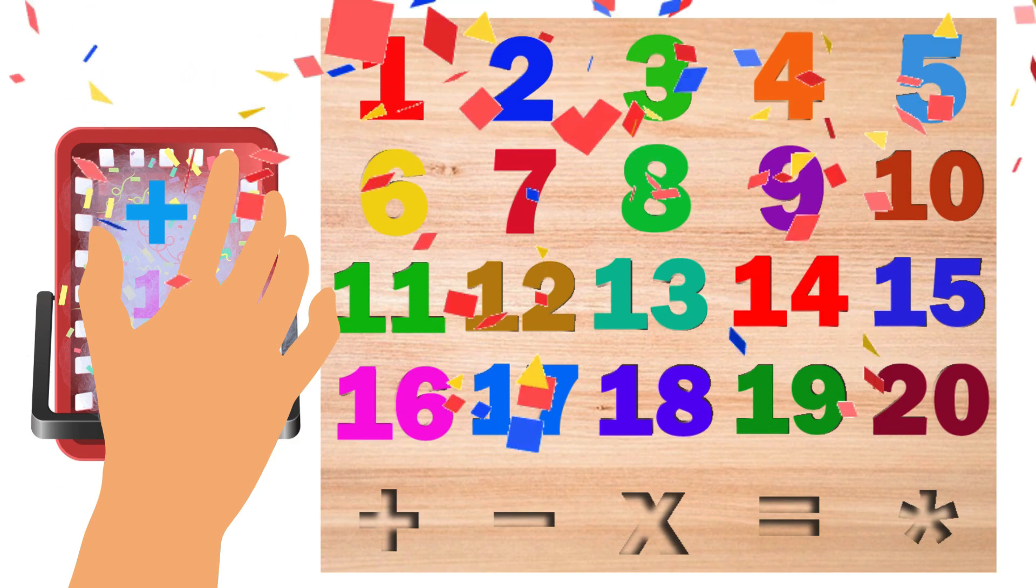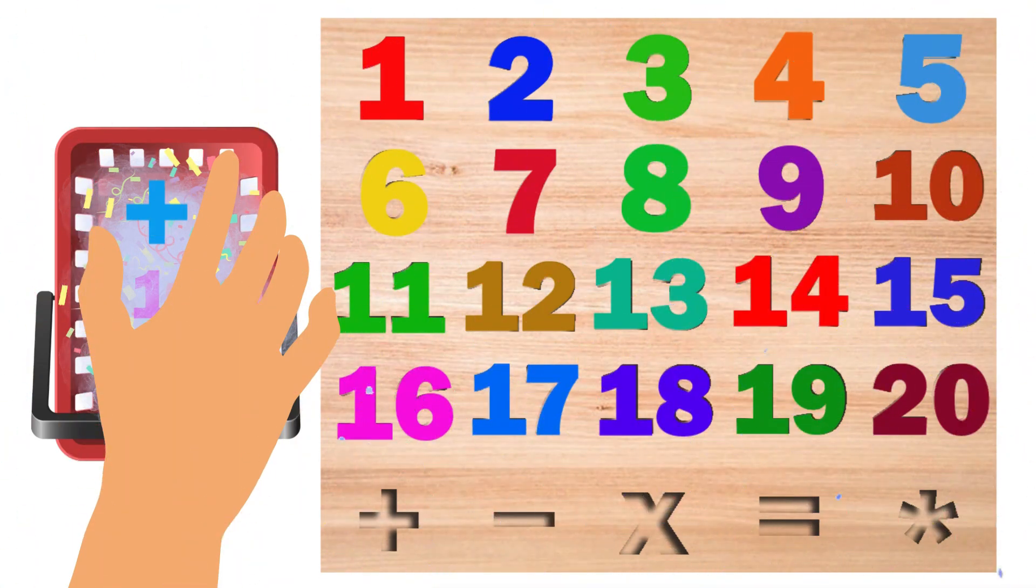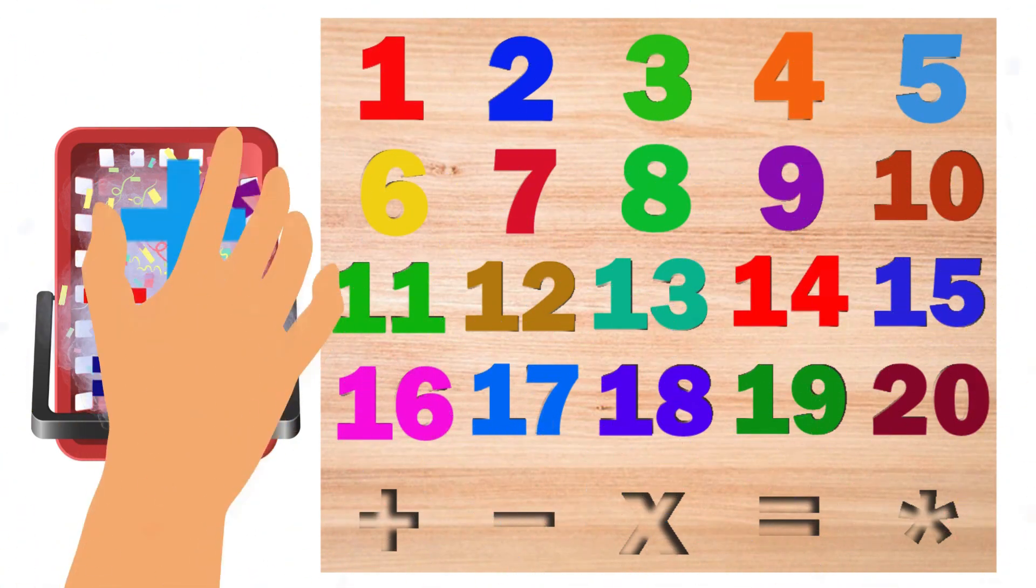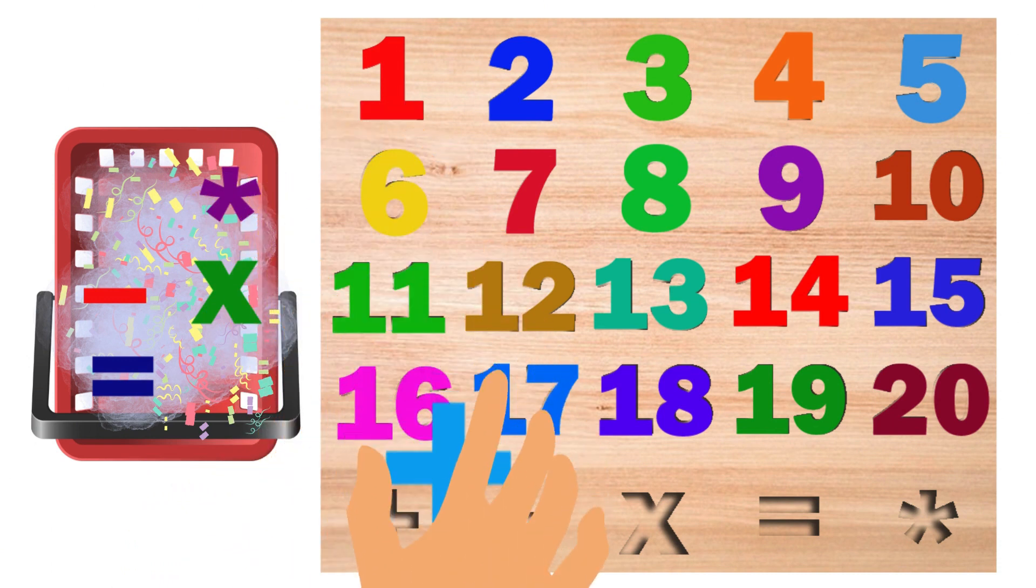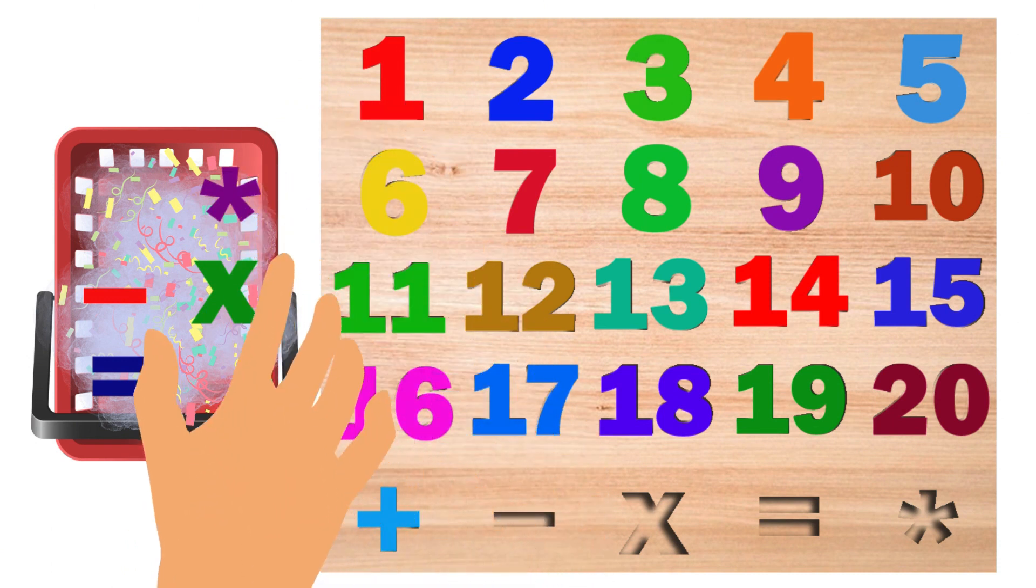We have fixed all numbers into the puzzle board. See there are some other signs in the basket. Let's fix these signs to complete the puzzle. This is the plus sign. Let's place it on the puzzle board. Yes, we did it right.